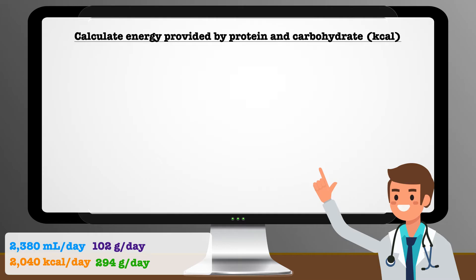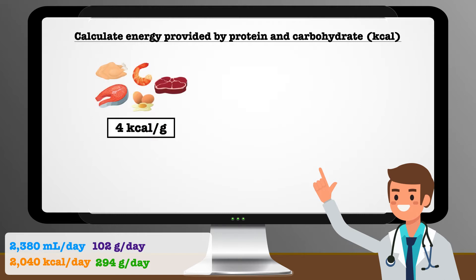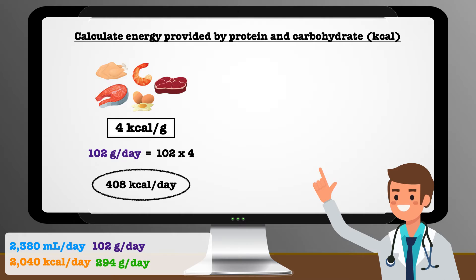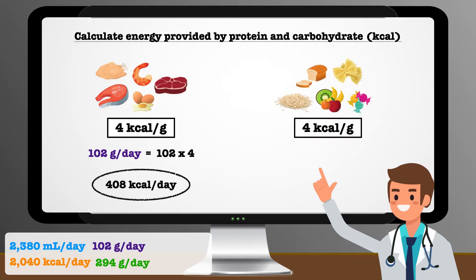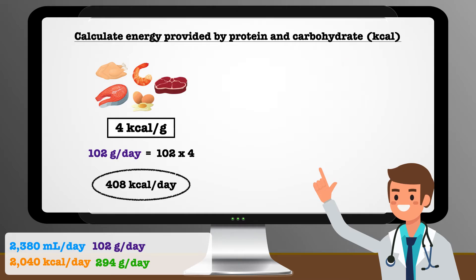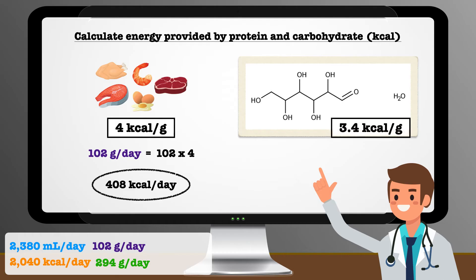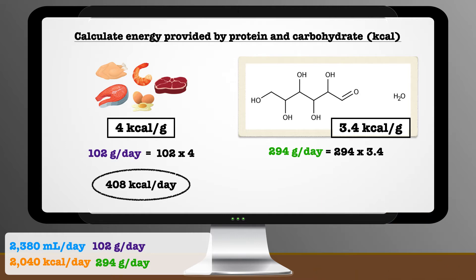The third step is to calculate how many calories this provides, which is important to ensure we satisfy the estimated energy demand and to help figure out what is needed for fat. Protein provides the standard 4 calories per gram, so 102 grams provides 408 calories per day. Carbohydrate is a little different — solutions used for parenteral nutrition are made with a hydrated form of dextrose, and it only provides 3.4 calories per gram. We multiply 294 grams by 3.4 calories per gram, and the result is right around 1,000 calories per day.